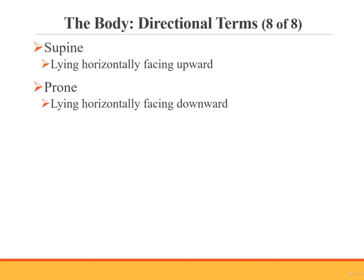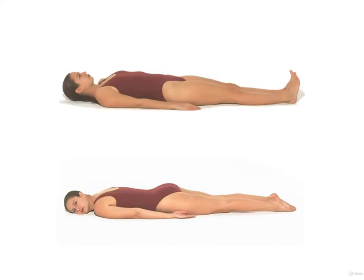Some directional terms describe the position of the body rather than the location of structures relative to one another. Supine and prone are two examples. Supine means lying horizontally facing upward. Prone means lying horizontally facing downward. In the top picture, the woman is lying in the supine position — on her back facing up. In the bottom picture, she is lying prone, flat on her stomach with her head turned sideways.